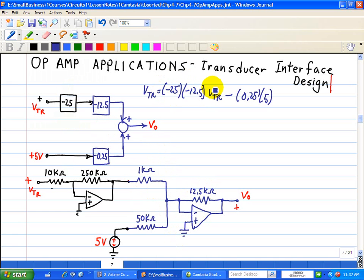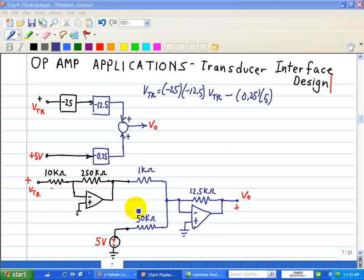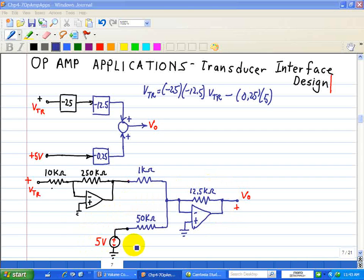Now that completes this first term. And then dealing with the second term, shown here, we have this part of the summer. So we have 12.5 divided by 50 equals 0.25. And in this case, 12.5k over 50k still yields 0.25, multiplied by this 5 volt reference voltage to do our level shifting.